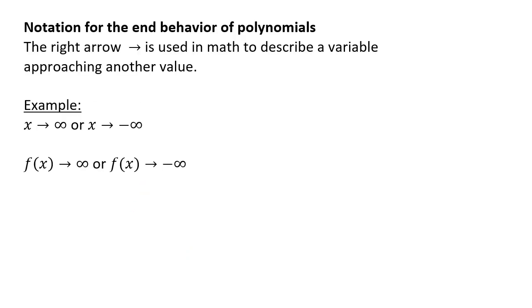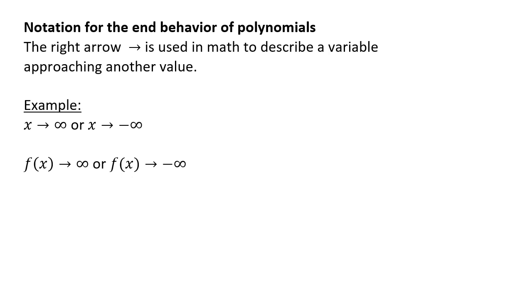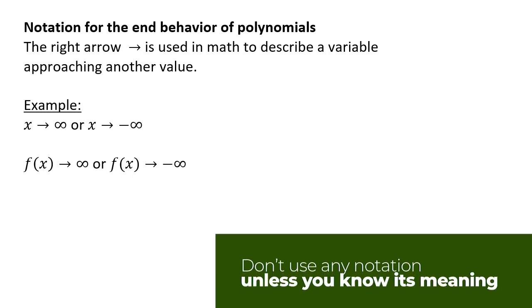Before talking about the next concept, we need to discuss notation. The right arrow is used in math to describe a variable approaching another value. This is a behavior, not an equation. For example, x approaches positive infinity, or x approaches negative infinity, or f of x approaches positive infinity, or f of x approaches negative infinity. Do not use the arrow symbol unless you are absolutely positive what it means in words and math.